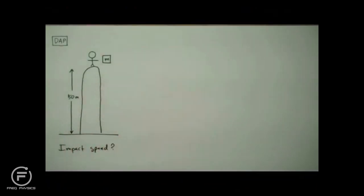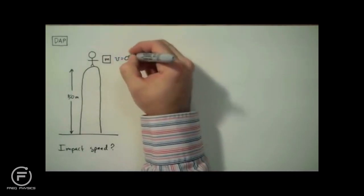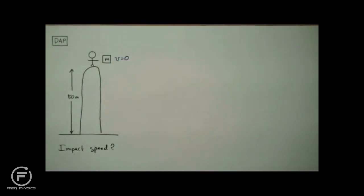So what is the impact speed of our dropped object? It would seem that we don't have enough information to solve this problem. The only thing we're given is the initial vertical displacement. But there's a couple pieces of implied information. Like the initial velocity. We said it was dropped. That means the initial velocity is zero.